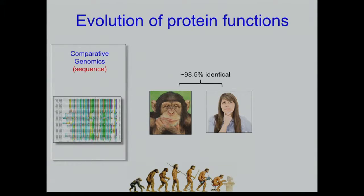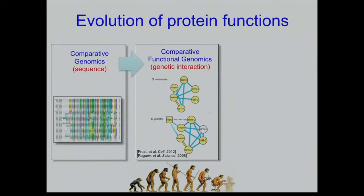Comparative genomics is one of the approaches people use to study evolution, and it's been really very important and continues to be important. The point has been made by multiple speakers even today that not everything is in the sequence — so you have to look at the network.